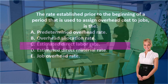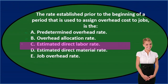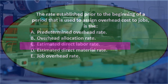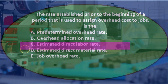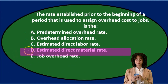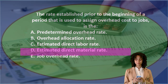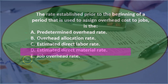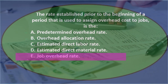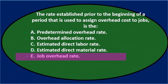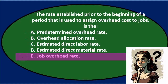C) estimated direct labor rate — the reason that might sound familiar is that we typically use direct labor to help determine this rate, but it's not an estimated direct labor rate; we're estimating the overhead, so it's not C. D) estimated direct materials rate — we could use materials to calculate the rate since we're using a ratio to gauge job size, but it's not D. E) job overhead rate — that's kind of what we're applying, so it sounds somewhat reasonable.